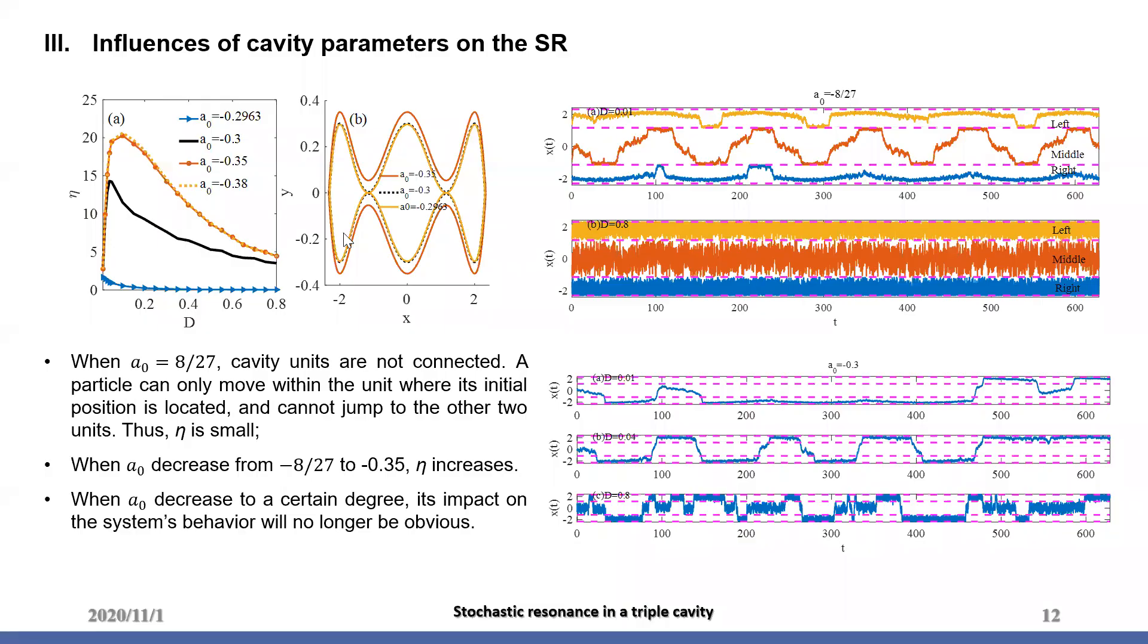Thirdly, influence of channel parameters is concerned. In this page, when A0 equals to minus A2 over 27, the three units of the cavity are not connected, as shown here by the yellow lines. In this case, a particle can only move within a unit where its initial position is located and can't jump to the other two units, as shown in this figure. In this case, no matter what d is, eta keeps small.